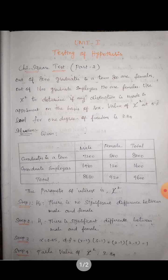Alpha is at the five percent level of significance. The degrees of freedom will be (r minus 1) multiplied by (s minus 1), where r is the number of rows and s is the number of columns. Substituting, we get a value of one. The table value of chi-square at one degree of freedom is directly given as 3.84.